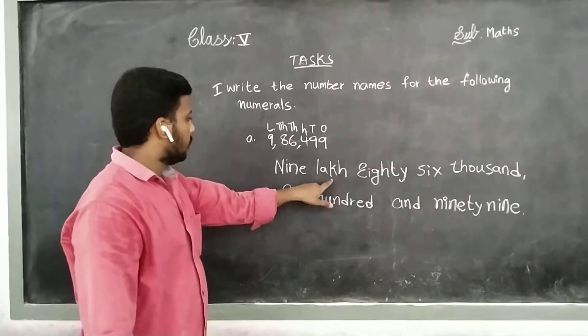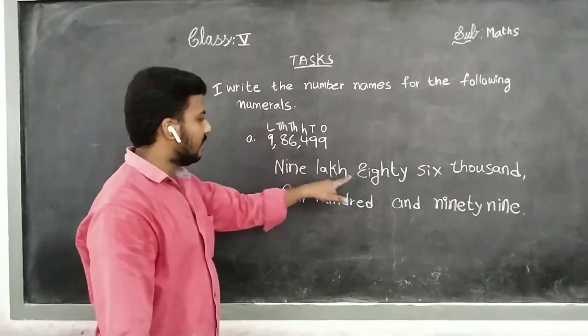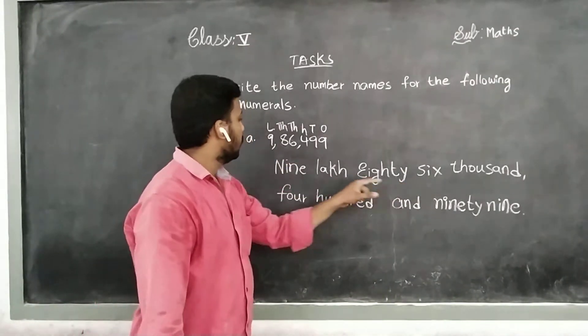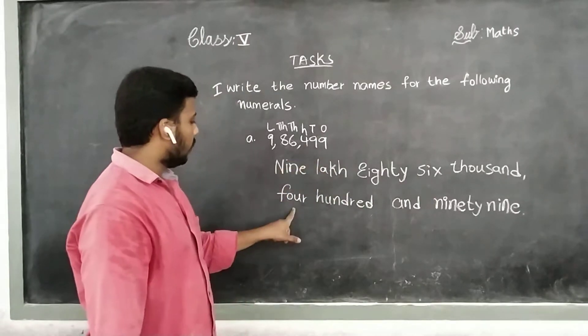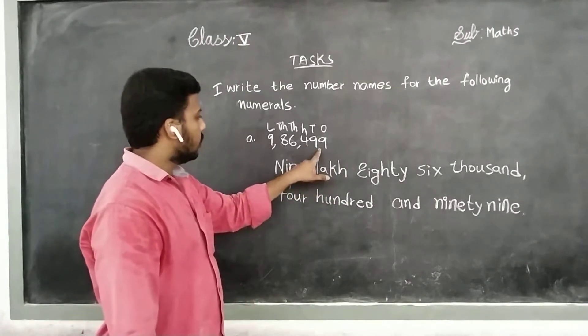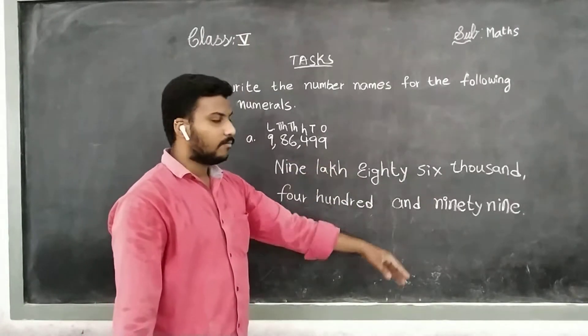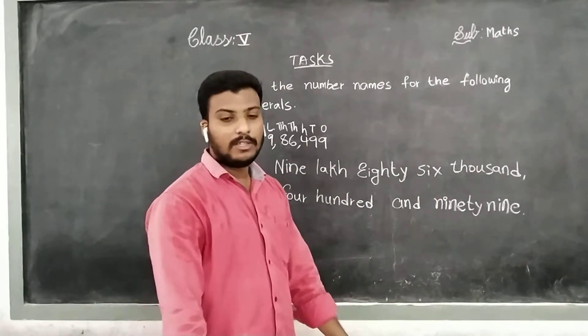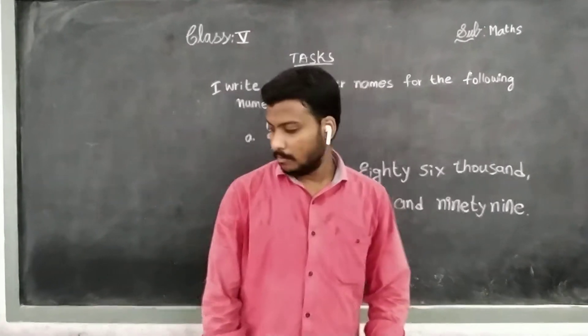So children, the full number is 9,86,499. We will see one more, children.